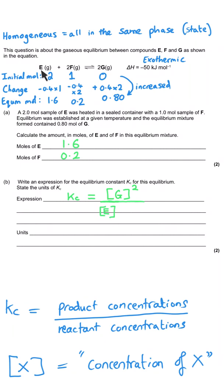And then we put on the bottom the concentration of E, the first reactant, and there is no power there because it's raised to the power of 1. And then the concentration of F comes next, and that's raised to the power of 2 because of the coefficient in front of F. So that's what they mean when they say write the expression for Kc.